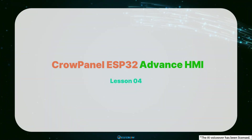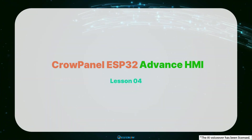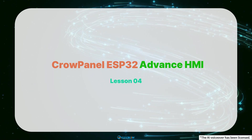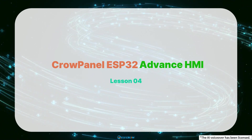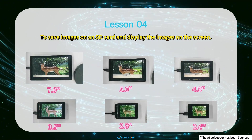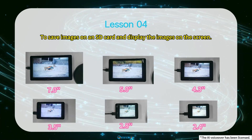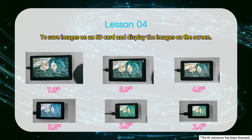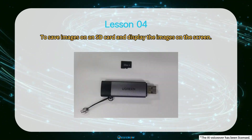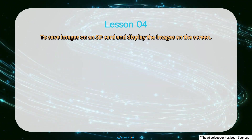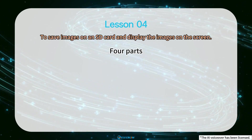Hello everyone. Welcome to the application tutorial video of Cropanel ESP32 Advanced HMI Lesson 4. The effect we want to achieve in this lesson is to save images on an SD card and display the images on the screen. The implementation of this lesson requires everyone to prepare an SD card and a card reader. This lesson will be divided into four parts for explanation.